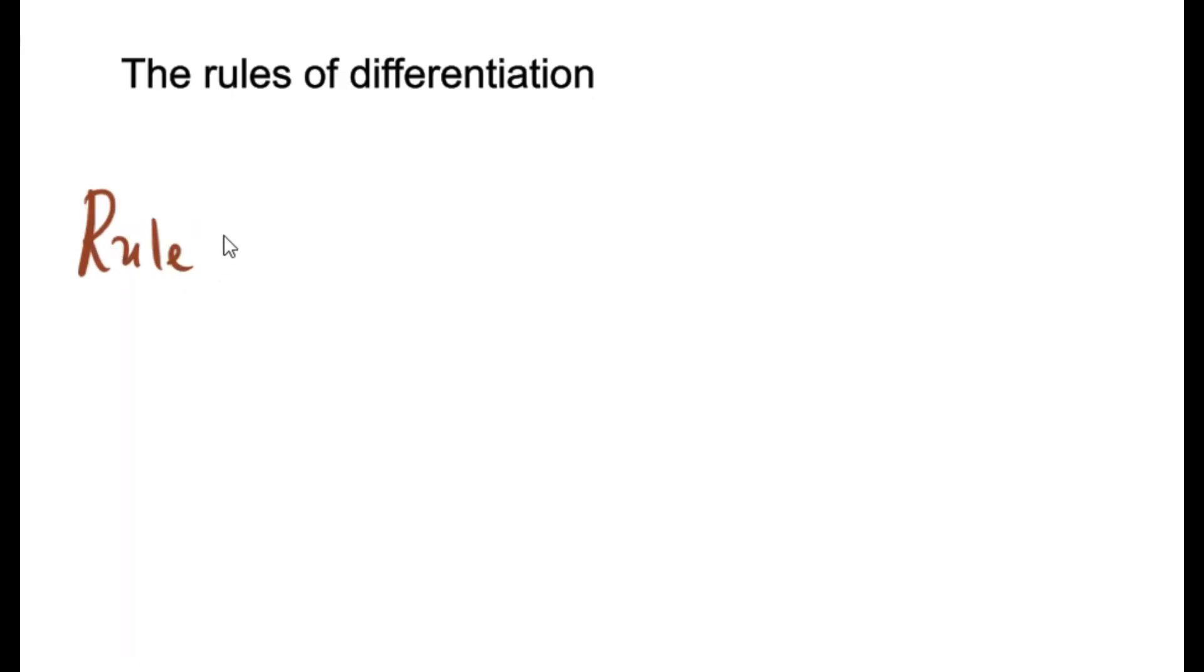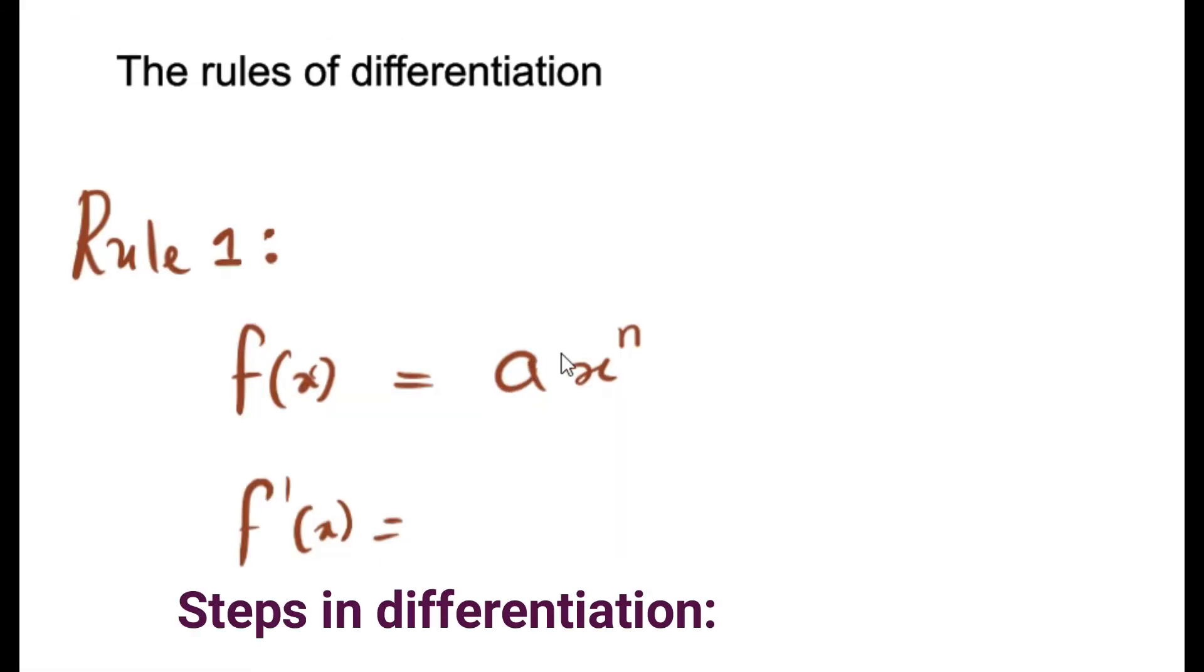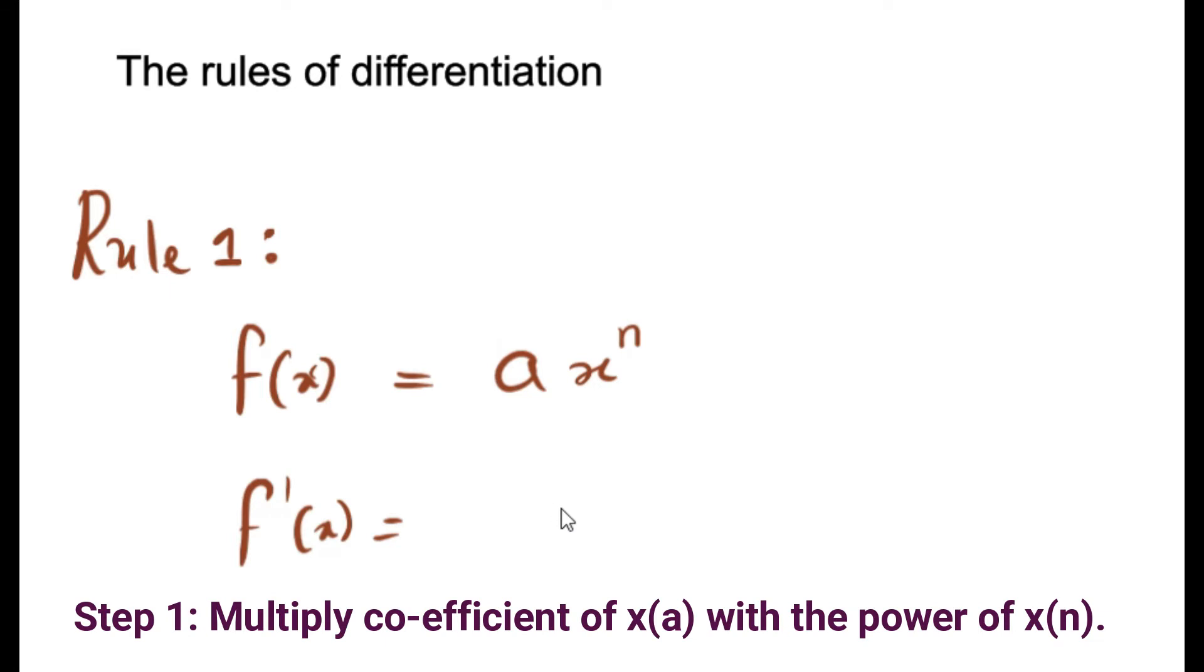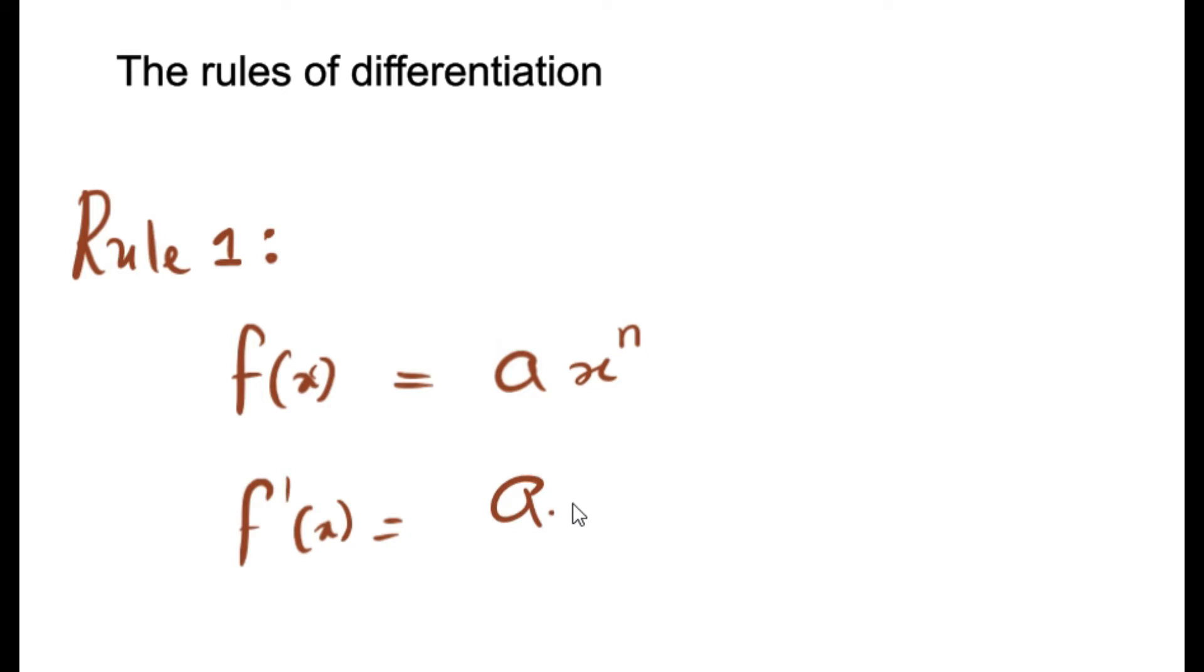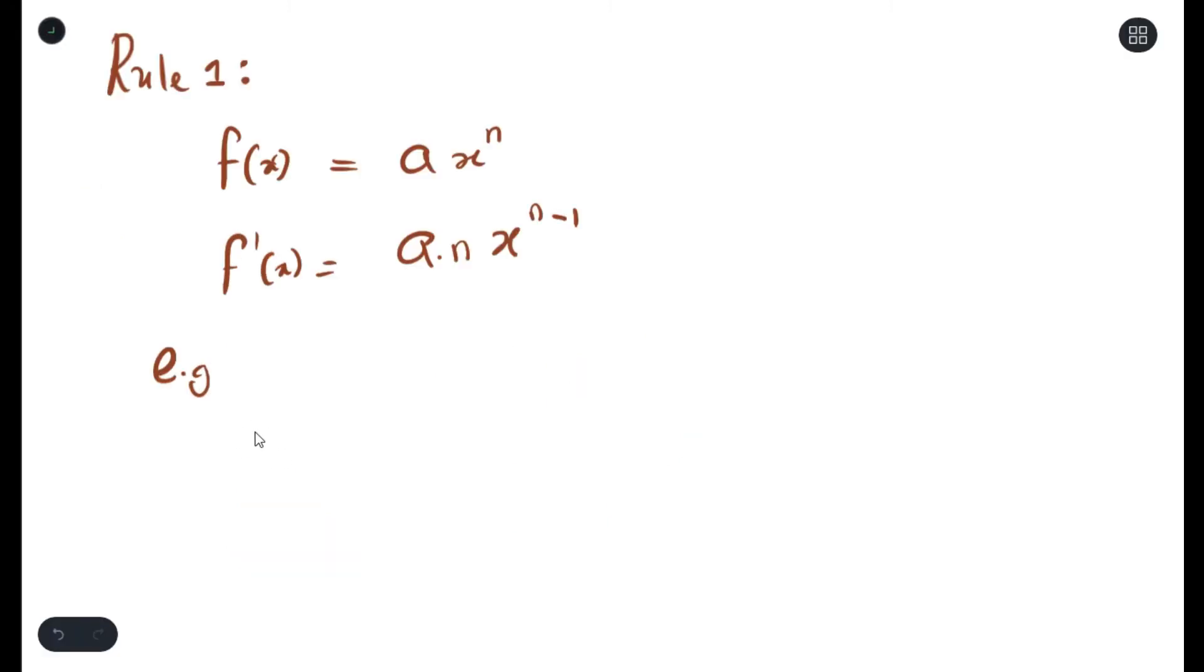The first rule: if you have a function which is ax to the power of n, when going from the function to its derivative, we multiply the coefficient of x with the exponent of x, meaning we multiply a times n, and we also subtract one from the exponent. So whatever our value for our exponent is, we'll subtract one.